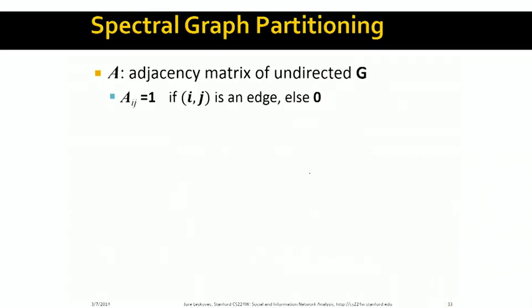We have already defined the notion of graph adjacency matrix. We said that we will denote A as the graph adjacency matrix.